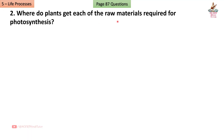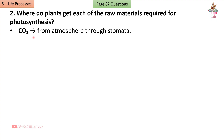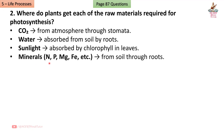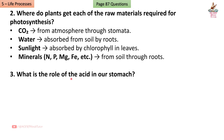Question 2: Where do plants get each of the raw materials required for photosynthesis? Answer: CO2 from the atmosphere through stomata; water absorbed from soil by roots; sunlight absorbed by chlorophyll in leaves; minerals — nitrogen, phosphorus, magnesium, iron, etc. — from soil through roots.